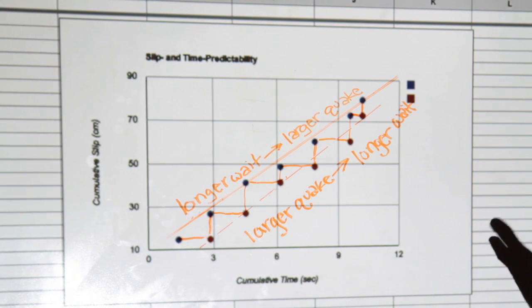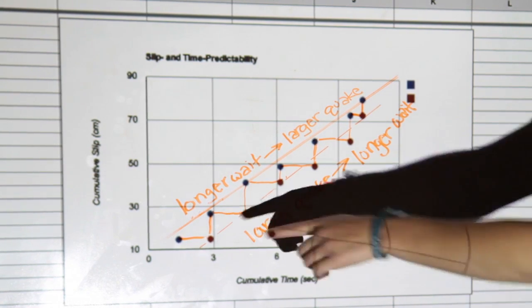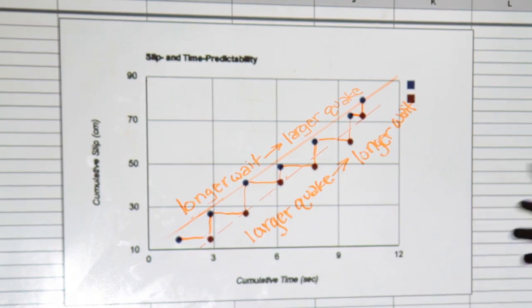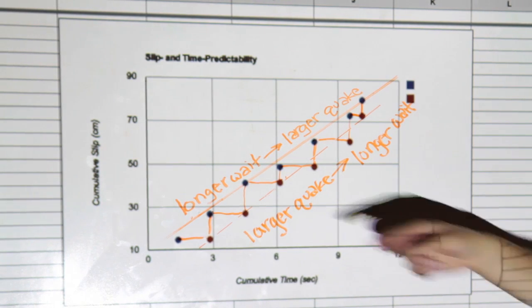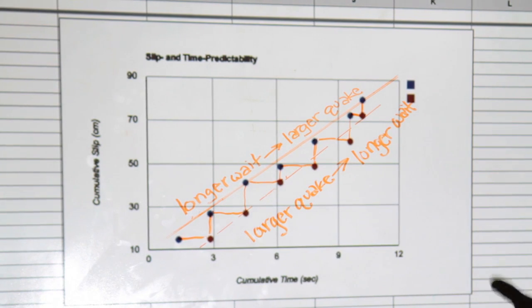Now if we look at this data in comparison to the hypotheses, we don't see a lot of compatibility. Neither of these hypotheses perfectly fit the data, so it's quite difficult to predict when the next earthquake will be.